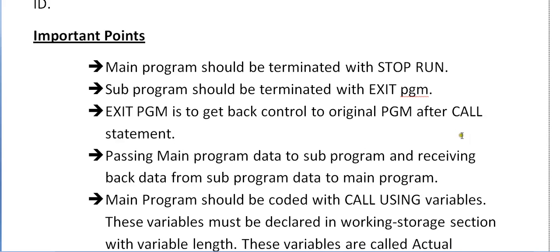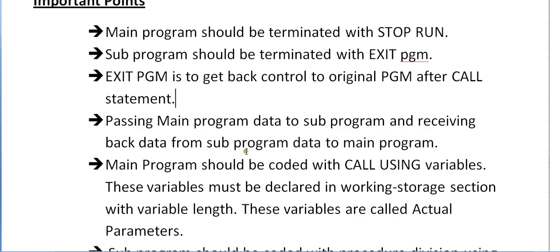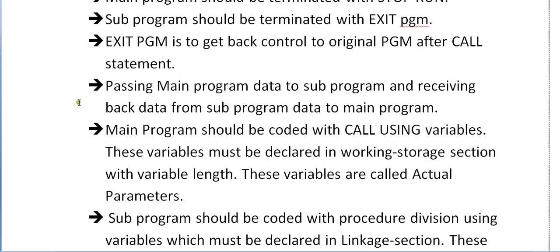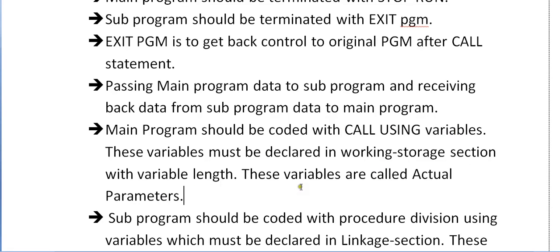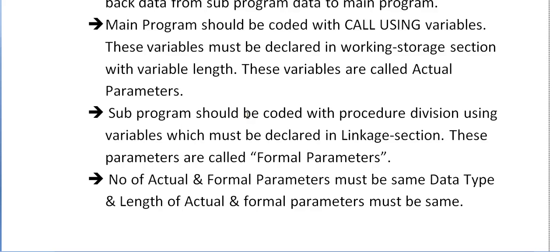The statements after the CALL statement continue to execute. Passing data from main program to sub program and receiving data back from sub program to main program: the main program should be coded with CALL USING some variables. These variables must be declared in the Working Storage section with variable length; these are called actual parameters. The sub program should be coded with PROCEDURE DIVISION USING variables, which must be declared in the Linkage Section; these are called formal parameters.